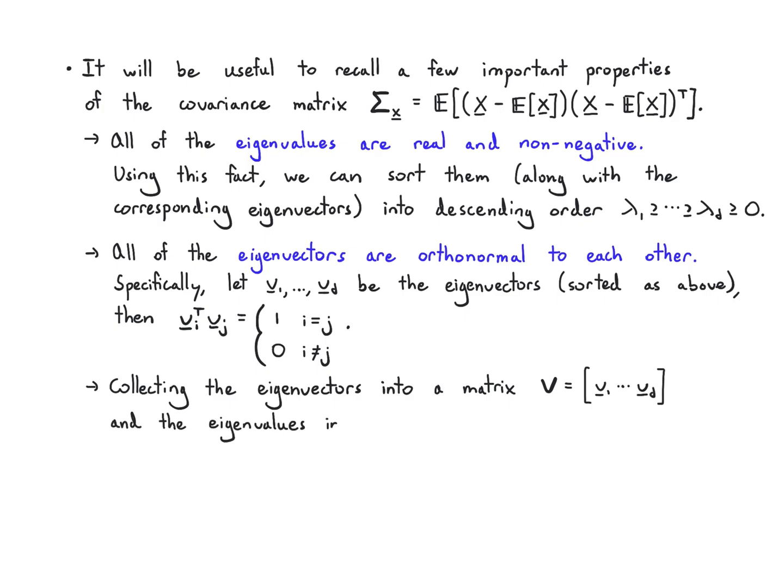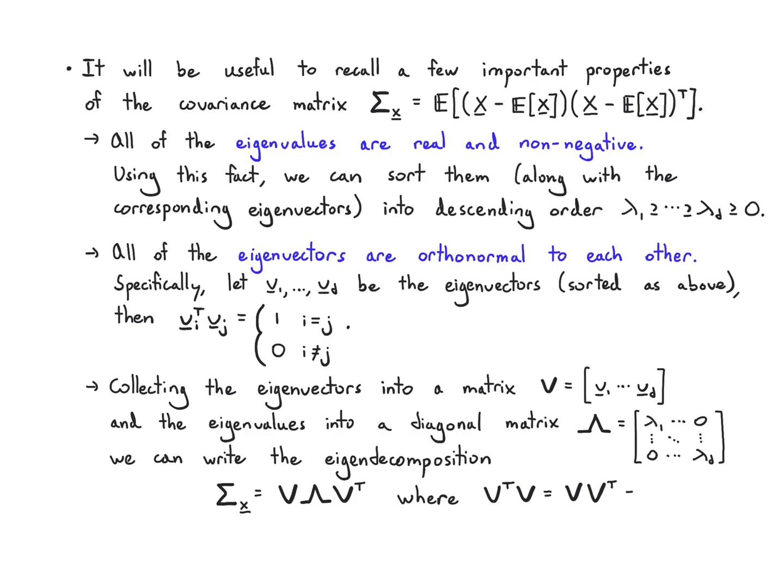We collect those into a matrix, the eigenvectors and eigenvalues into a diagonal matrix called Λ. The eigenvector matrix V, then what we have is an eigendecomposition of our covariance matrix which we write as VΛVᵀ, with the property that V times its own transpose is identity because it's orthogonal.